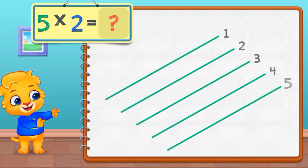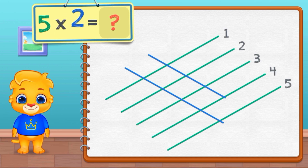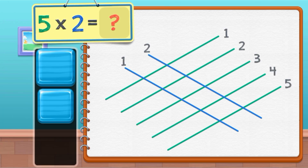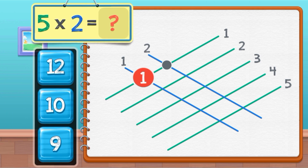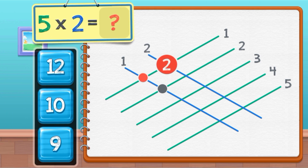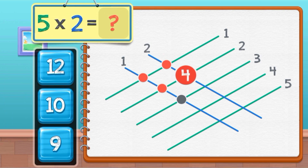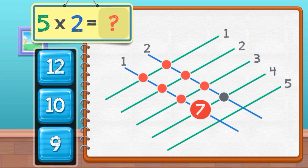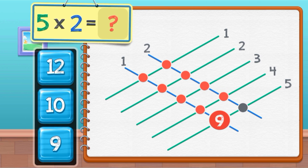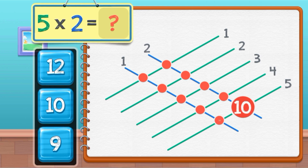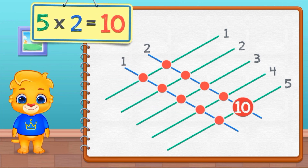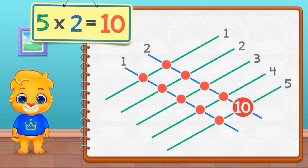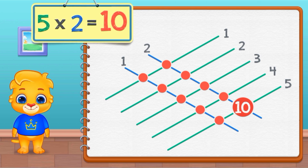5 times 2 equals 1, 2, 3, 4, 5, 6, 7, 8, 9, 10. 5 times 2 equals 10.